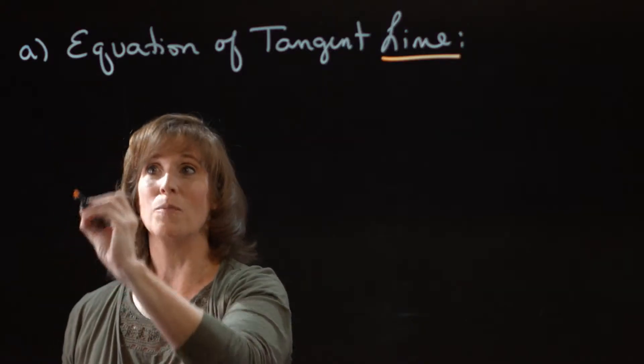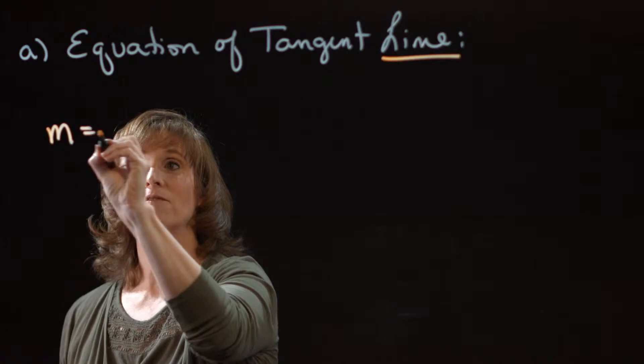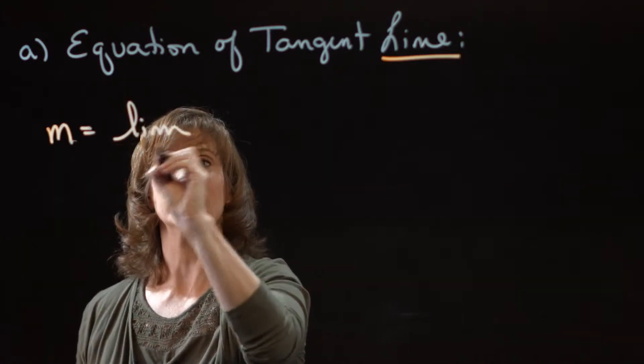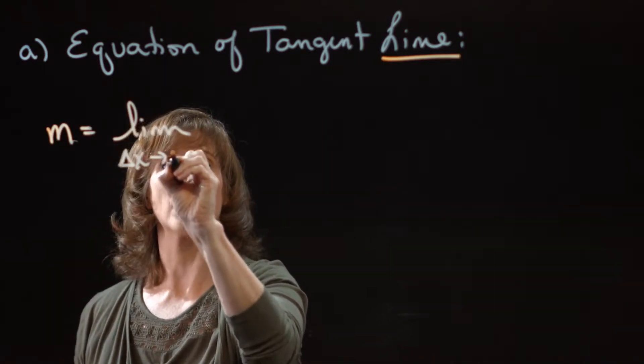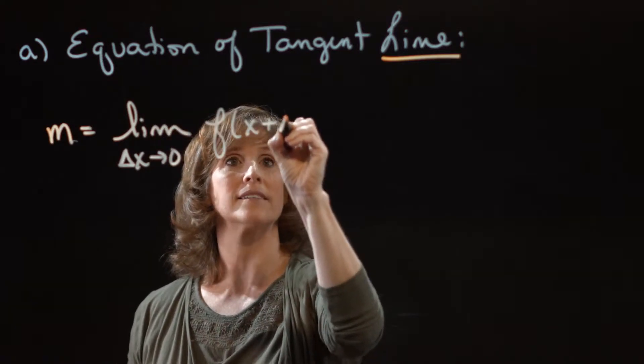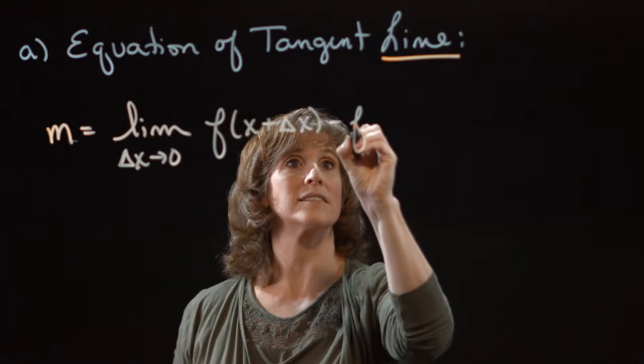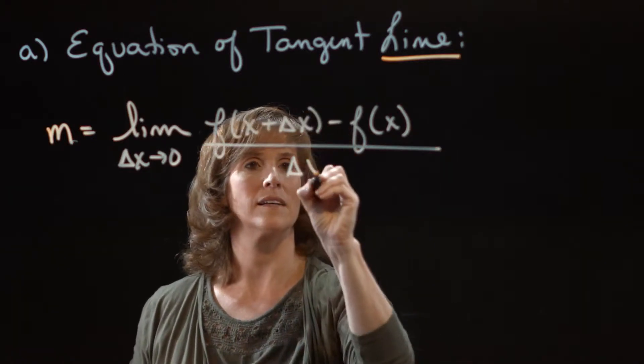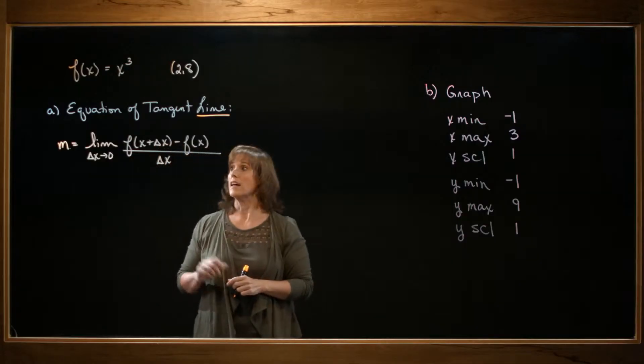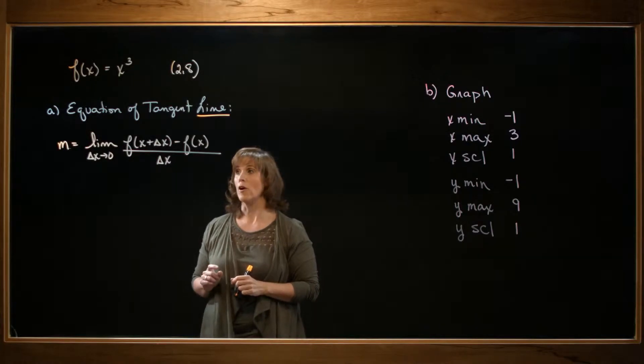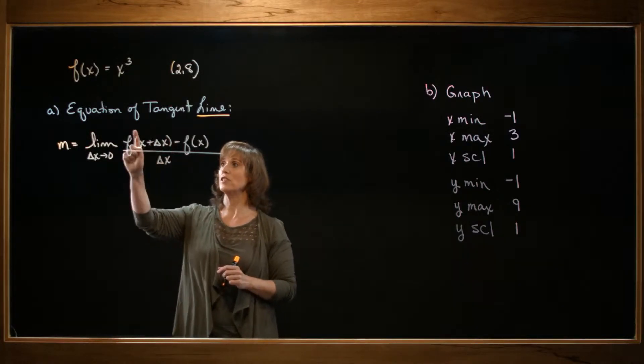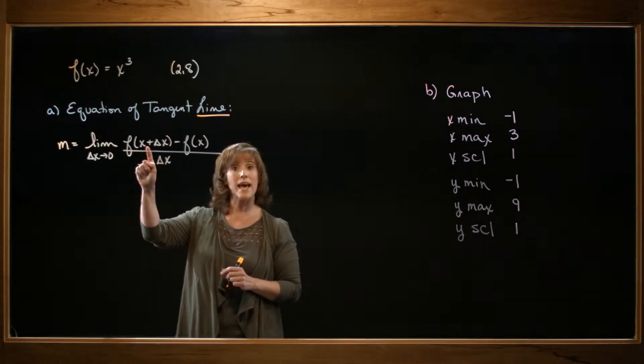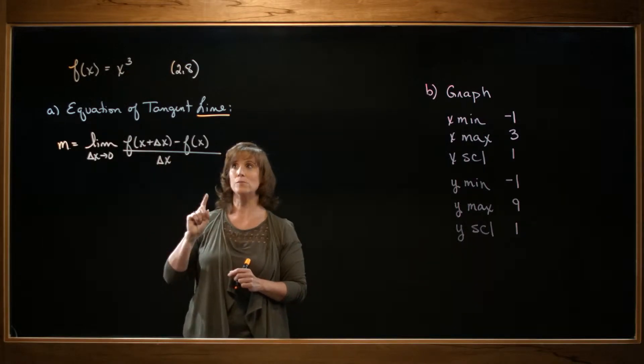We know the slope of a tangent line is defined as the limit as delta x approaches zero of f of x plus delta x minus f of x all over delta x. Now, to evaluate this limit, there are really four parts.